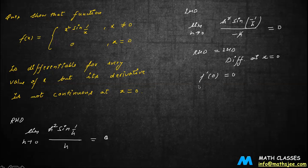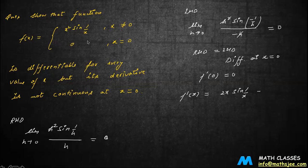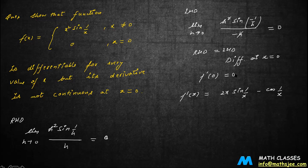Now for x not equal to 0, f'(x) equals 2x·sin(1/x) plus x²·cos(1/x)·(minus 1/x²). The x² and 1/x² cancel, so f'(x) equals 2x·sin(1/x) minus cos(1/x). Now to check if this derivative is continuous at x equal to 0, we need limit x tends to 0 of f'(x) to equal f'(0) which is 0. We check limit x tends to 0 of [2x·sin(1/x) minus cos(1/x)].